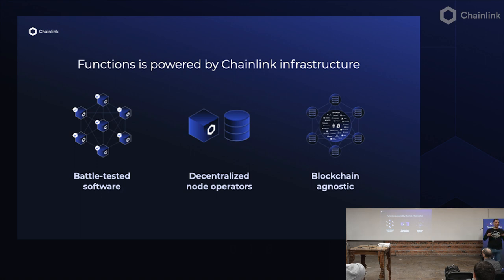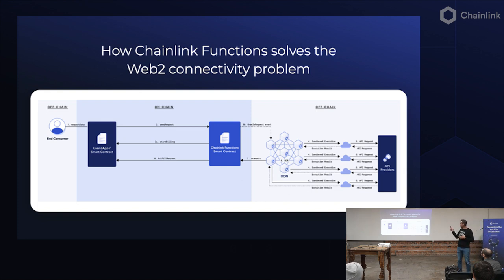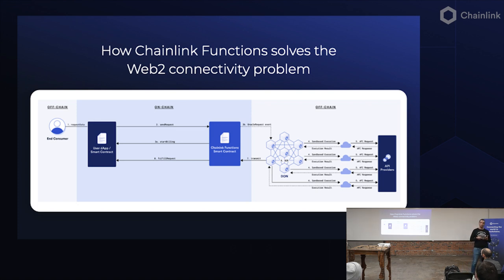It's powered by the Chainlink platform — that battle-tested software, OCR2, that secured and enabled $7 trillion of value last year. It's running on the same infrastructure, same software, using the same node operators who are reputable, reliable, and geographically distributed. And it's blockchain agnostic. Your smart contract makes a call to the Chainlink Functions smart contract and sends JavaScript that it would like it to run. The contract sends it to the DON, every node makes its own API call, gets results, comes to consensus with OCR2, and feeds back the result to your smart contract.